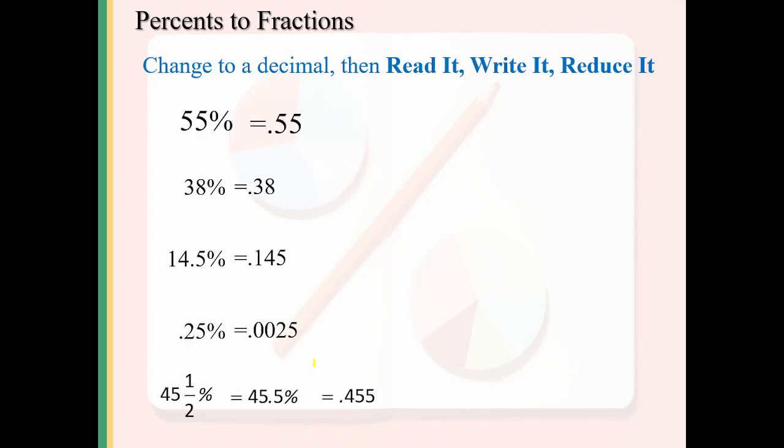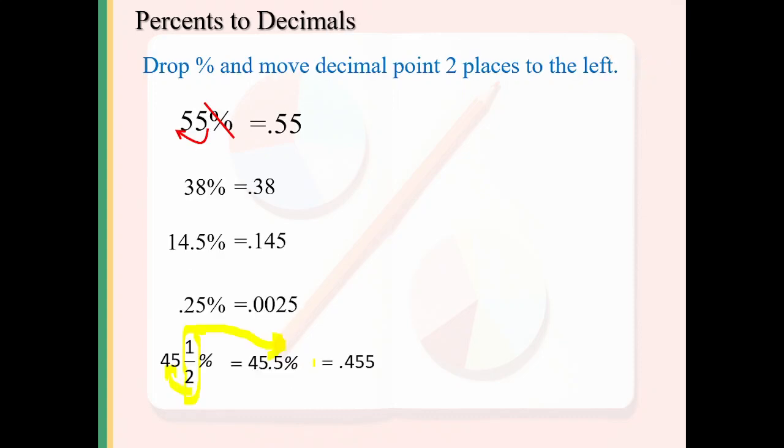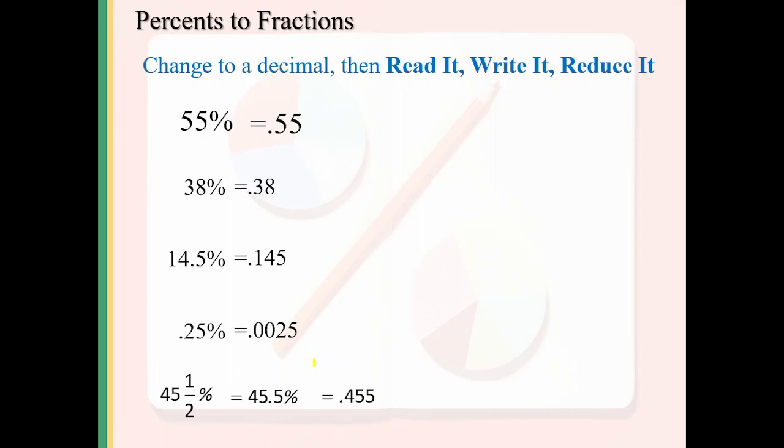Percentage to fraction: you've seen percentage to decimal. Now we take percentage to fraction. The trick is you left the percentage sign, moved 2 places and put the decimal point. Now you can go directly to this step - skip the decimal step. Percentage means over 100, then simplify. 5 goes into 55 eleven times, 5 goes into 100 twenty times.